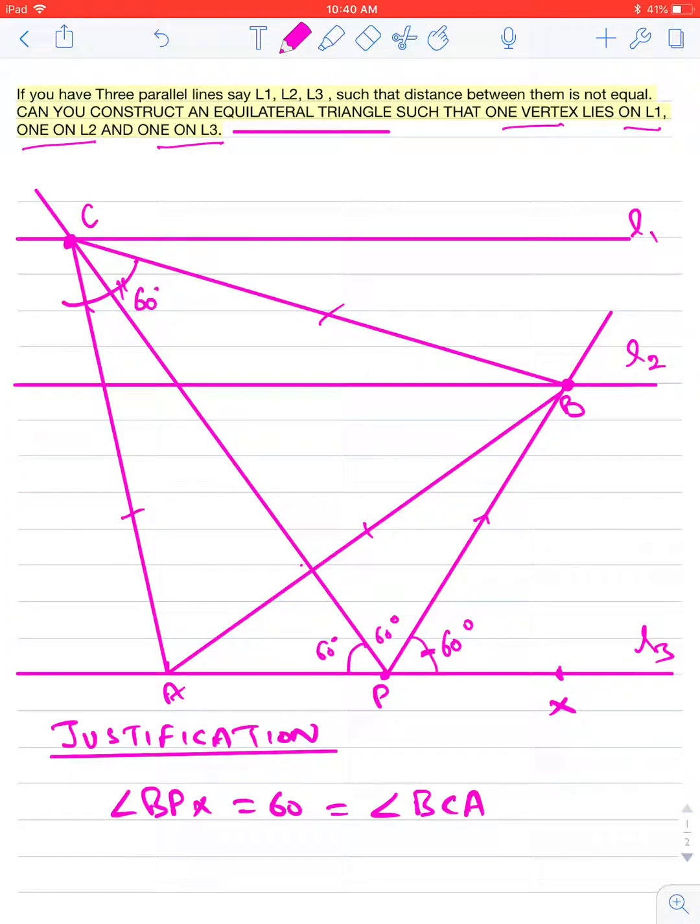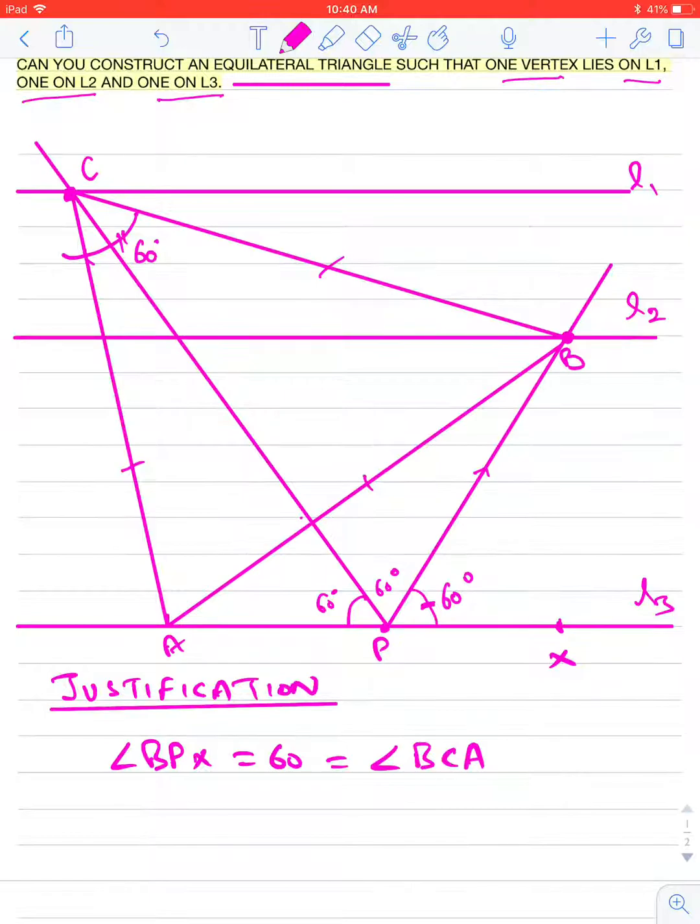It means quadrilateral APBC is a cyclic quadrilateral, because the exterior angle of a cyclic quadrilateral is equal to the interior opposite angle.